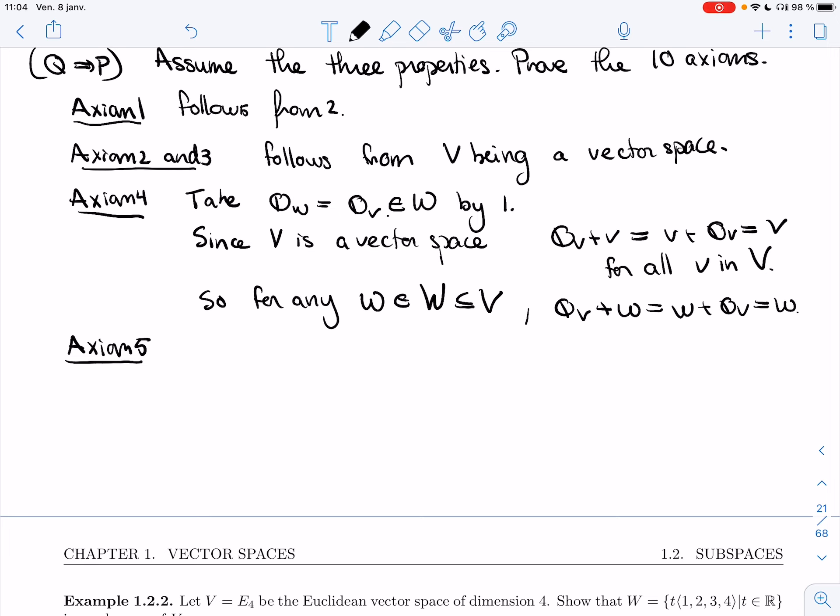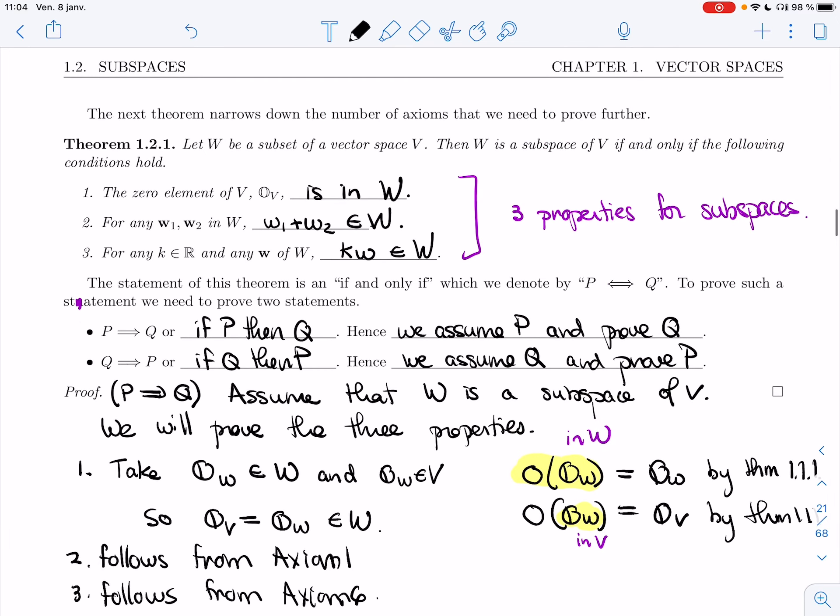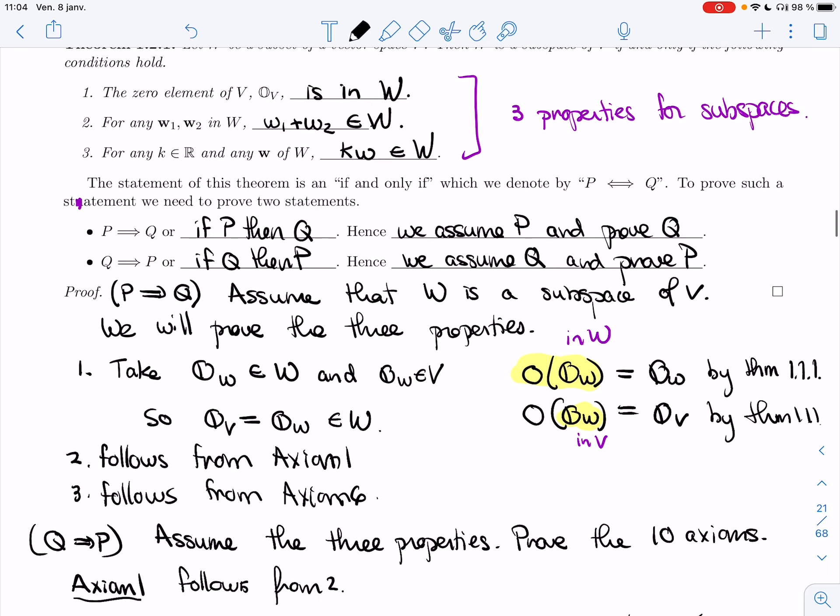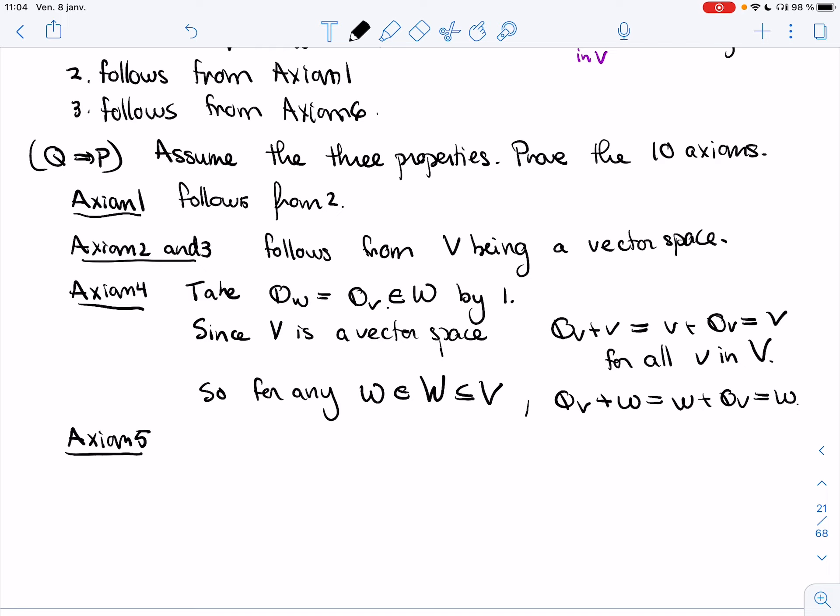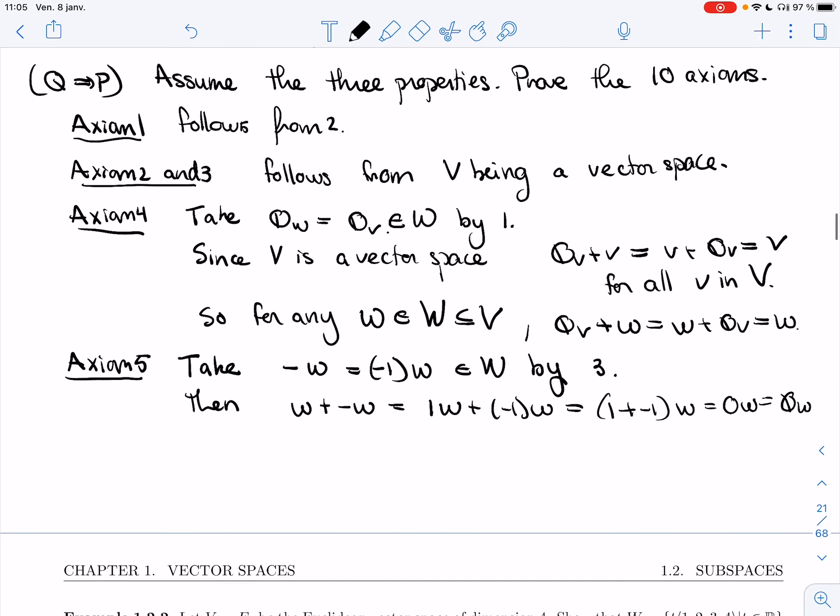Axiom 5. Notice that we don't have anything about the inverse in these three properties, but we have k times w, and we've seen that minus 1 times w will be the inverse, so that's what we'll take. So I'm going to take minus w to be equal to minus 1 times w, which is in W by property 3. Then w plus minus w equals 1w plus minus 1w. That's going to be (1 plus minus 1)w. That'll be 0w. That'll be 0_V, which is 0_W. Done.